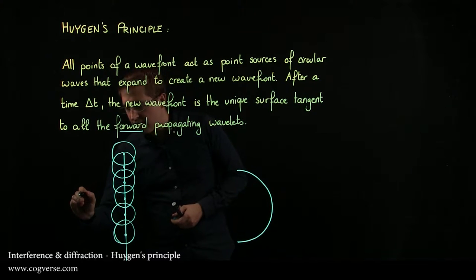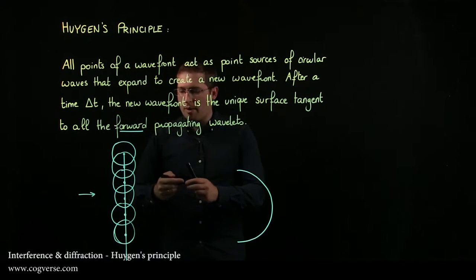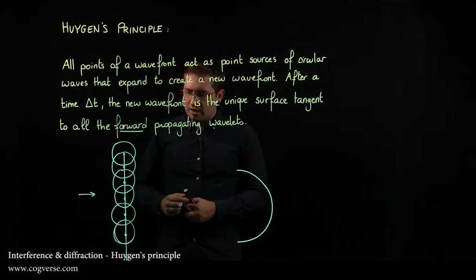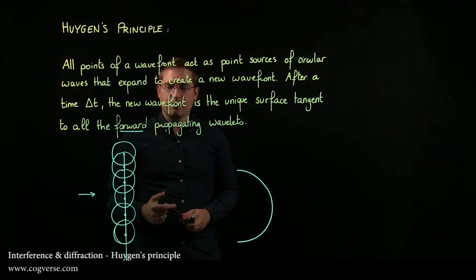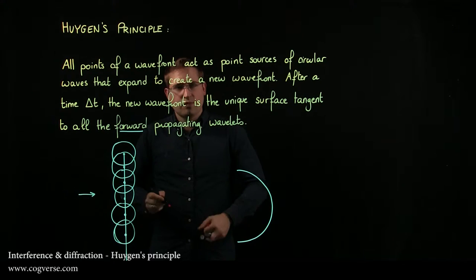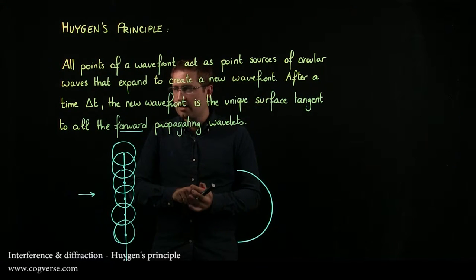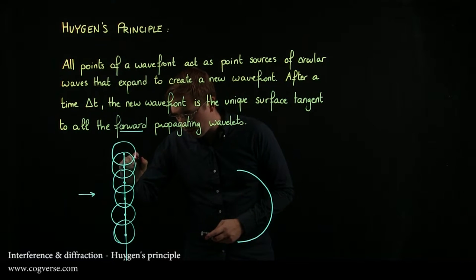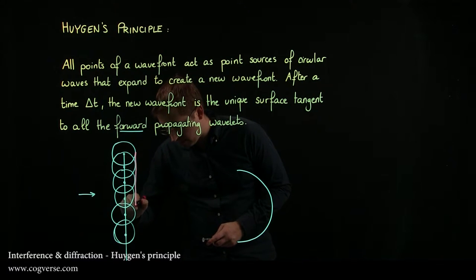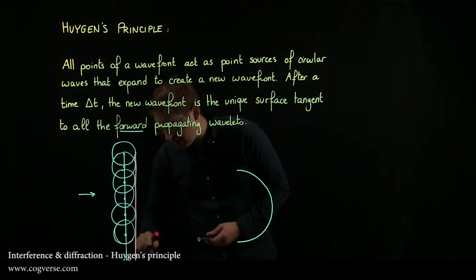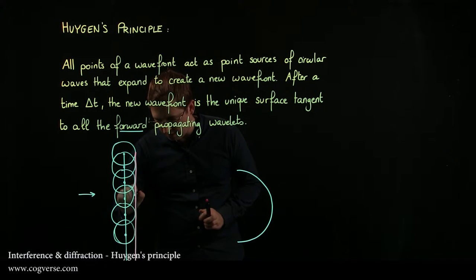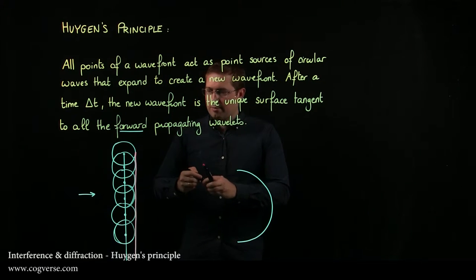Let's say that the wave is propagating to the right. Then forward propagating means going this way, and we want the surface that is tangent to all the forward propagating wavelets, and therefore it's going to be this. Now it should be tangent to exactly all of them, but hey, my ugliest circle was this one, so no surprise, but that's the idea.